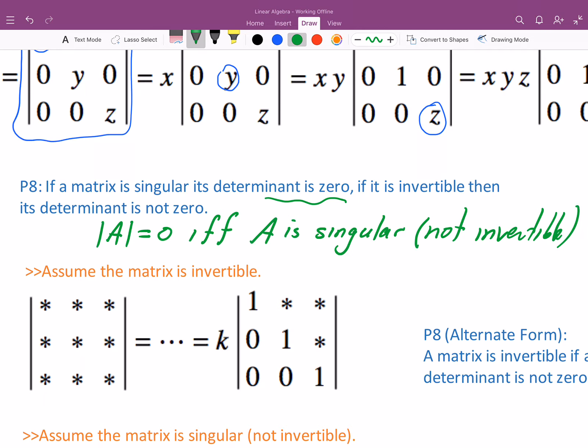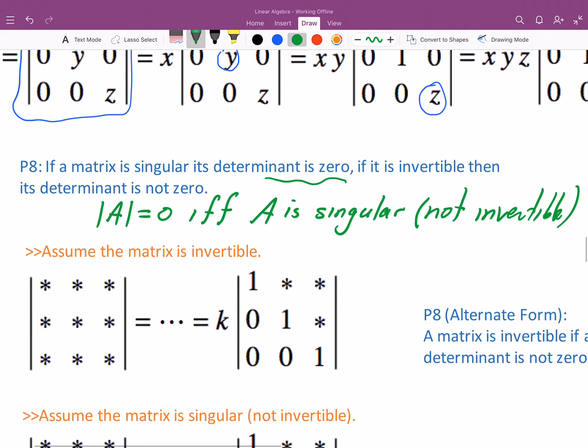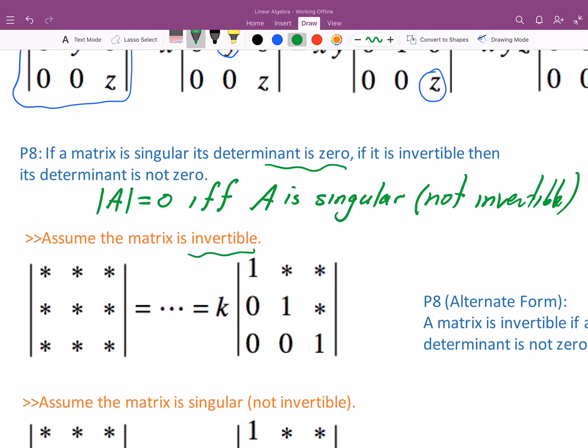So how do we establish this? Assume the matrix is invertible. If the matrix is invertible, then the row echelon form of A has pivots in every row. So eventually, using row operations, you can turn any square matrix to have 1s on the main diagonal and 0s below the diagonal.